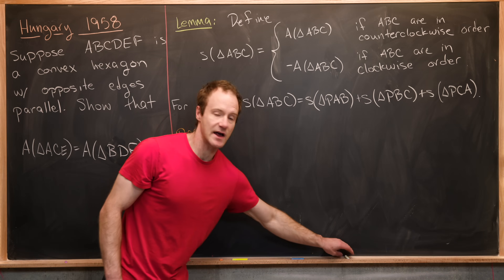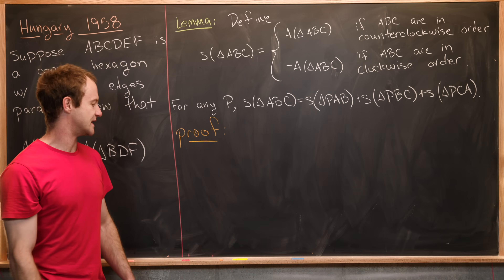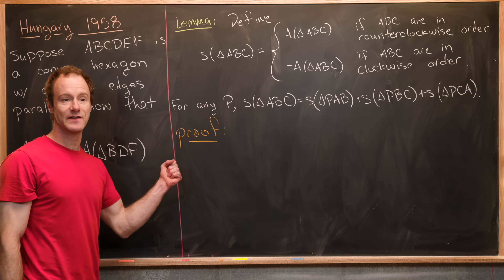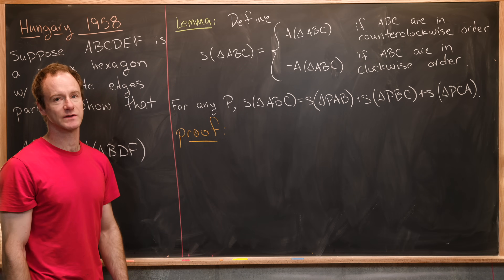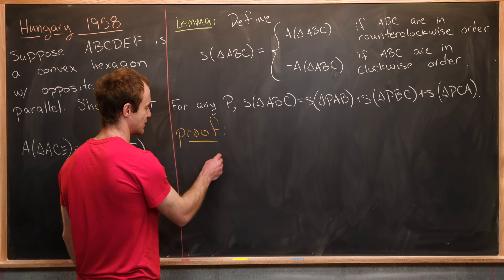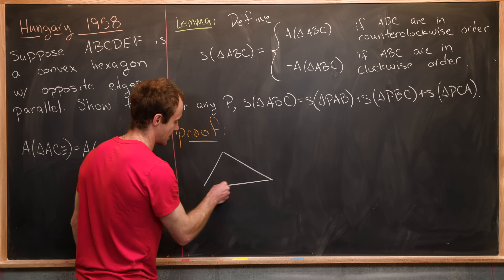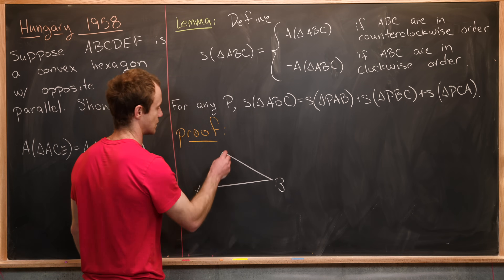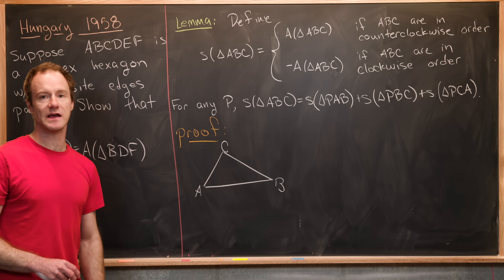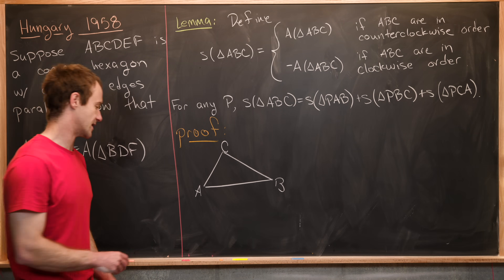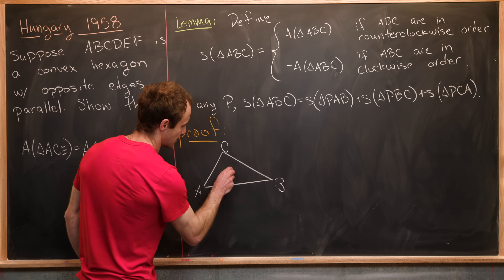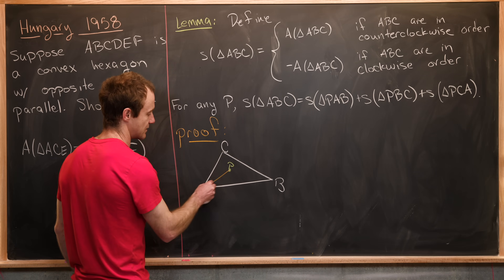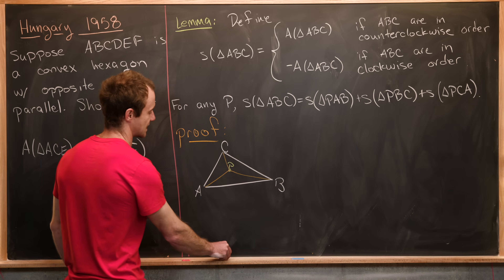This proof breaks down into two cases. The first case is if P is inside the triangle, and the second case is when P is outside the triangle. Let's look at the first case: we get our triangle ABC in counterclockwise order, so S of triangle ABC is really just the area. We put our point P inside, which creates sub-triangles marked with orange line segments.